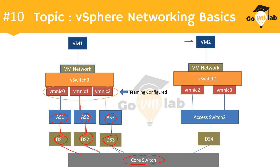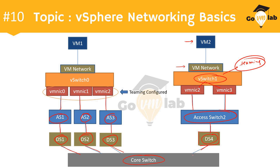Similarly, VM2 is connected to the VM network port group on virtual switch 1. This vSwitch1 has two uplinks — VMNIC2 and VMNIC3 — which means it is also configured in teaming mode. Both VMNIC2 and VMNIC3 of vSwitch1 are connected to a common access switch AS2, and AS2 is connected to its own dedicated distribution switch DS4. DS4 is also connected to the common core switch.